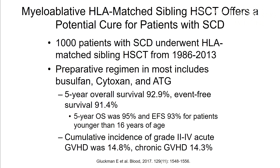The five-year overall survival was better for children younger than 16, at 95% overall survival and 93% event-free survival. There was a cumulative incidence of grade 2 to 4 acute graft-versus-host disease of about 15%, and chronic graft-versus-host disease of 14%. Graft-versus-host disease occurs when the donor immune system recognizes the patient as foreign and attacks them, causing hardening of the skin and scarring of the lungs — and it can be deadly. With sickle cell disease, we really don't want to see any graft-versus-host disease because there is no benefit.